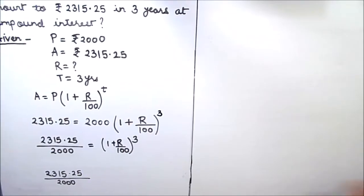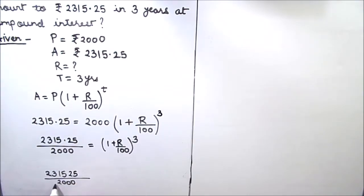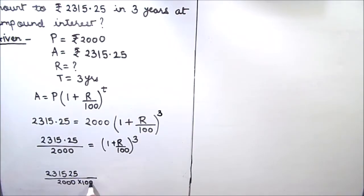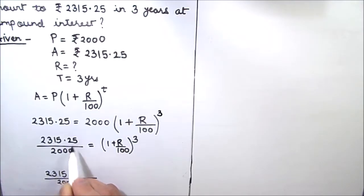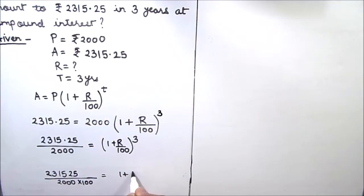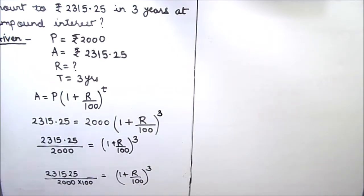To remove the decimal point, we get 2315.25 divided by 2000 multiplied by 100. Since we are removing the decimal point we have to divide by 100, because there are two digits after the decimal point. On the right hand side it will be 1 plus r divided by 100, raised to power 3.